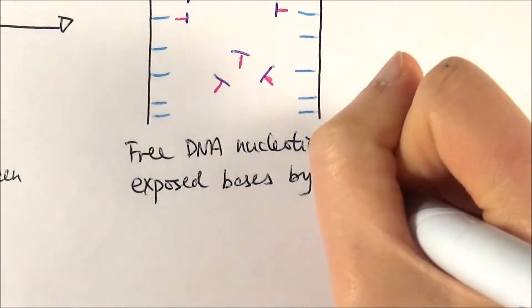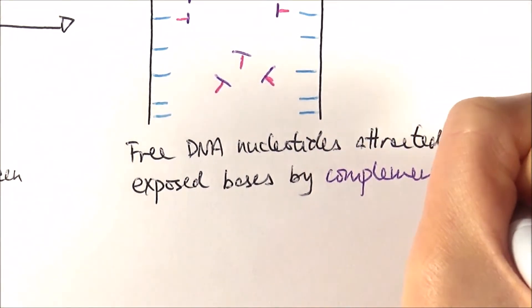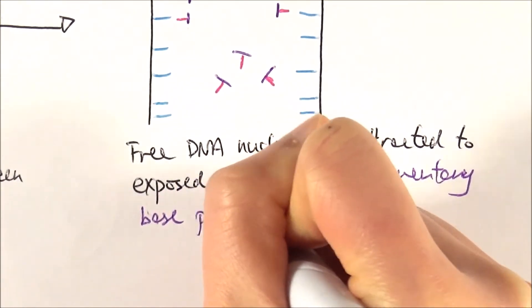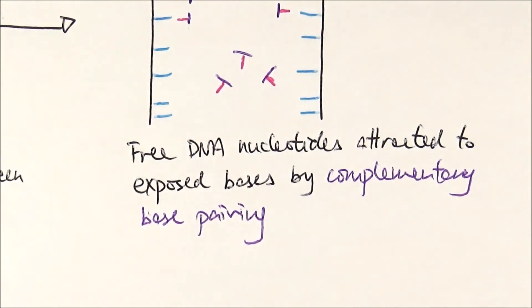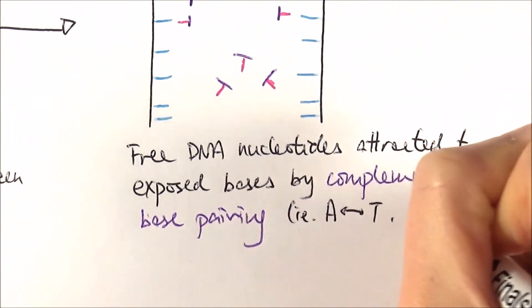One keyword to use here is complementary base pairing. Sometimes in exams, complementary base pairing is already worth a mark, and you might get extra marks by illustrating which base pairs with which - A pairs with T and C pairs with G.